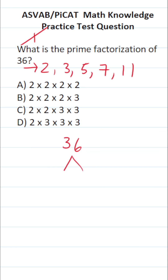36 is the same thing as 2 times 18. 2 times 18 is 36. 18 is 2 times 9. And 9 is 3 times 3.